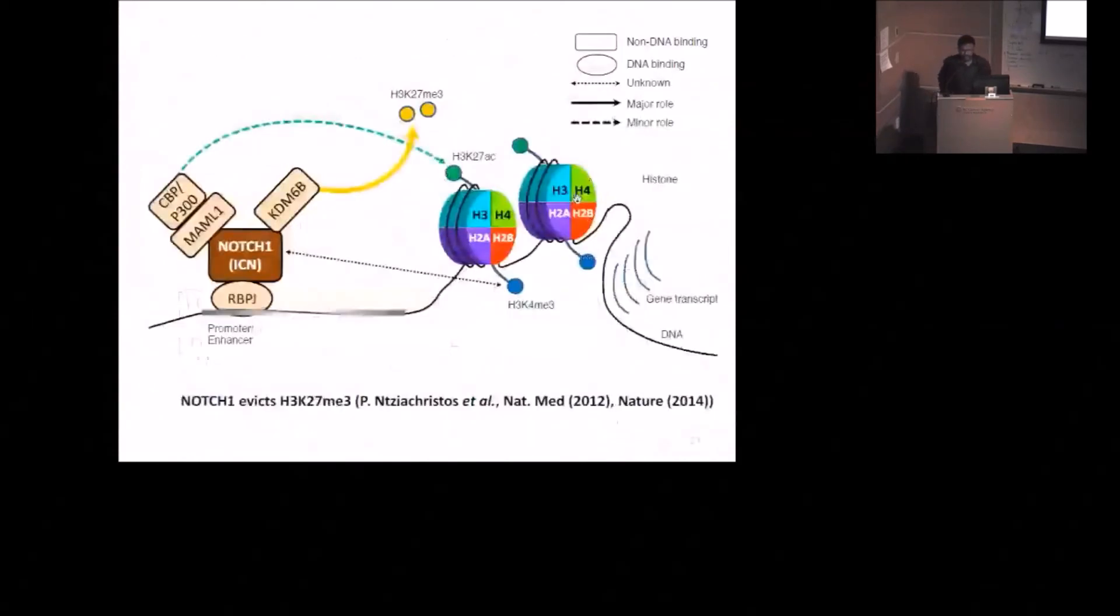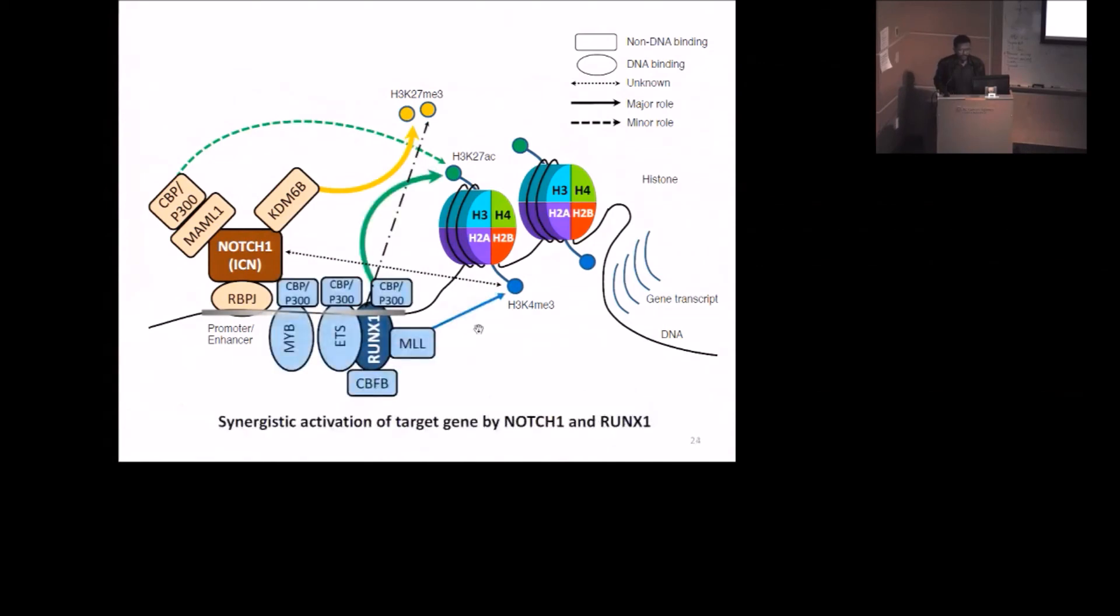So this is the general overview of the model. This is what people previously reported: NOTCH1 interacts with lysine demethylase that evicts 27 trimethylation. There are also some reports that NOTCH1 sometimes deposits acetylation mark to activate transcription. But what we added to this knowledge is that RUNX1 plays the prominent role in deposition of acetylation mark, whereas NOTCH1 removes the 27 trimethylations and creates the environment for RUNX1 to deposit the acetylation mark to activate transcription of target genes. So in conclusion, we propose that RUNX1 and NOTCH1 act synergistically to activate their transcription.